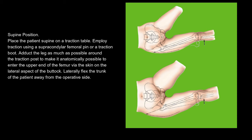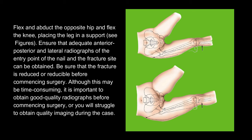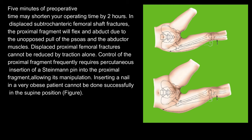Supine position. Place the patient supine on a traction table. Employ traction using a supracondylar femoral pin or a traction boot. Adduct the leg as much as possible around the traction post to make it anatomically possible to enter the upper end of the femur via the skin on the lateral aspect of the buttock. Laterally flex the trunk of the patient away from the operative side. Flex and abduct the opposite hip and flex the knee, placing the leg in a support. Ensure that adequate anterior, posterior, and lateral radiographs of the entry point of the nail and the fracture site can be obtained. Be sure that the fracture is reduced or reducible before commencing surgery. Although this may be time-consuming, it is important to obtain good quality radiographs before commencing surgery or you will struggle to obtain quality imaging during the case. Five minutes of preoperative time may shorten your operating time by two hours.